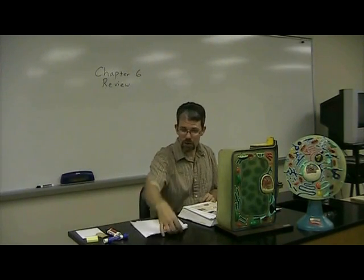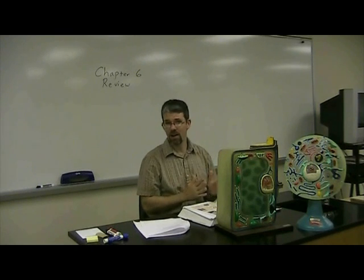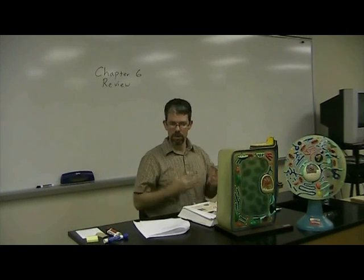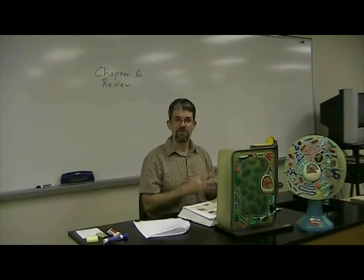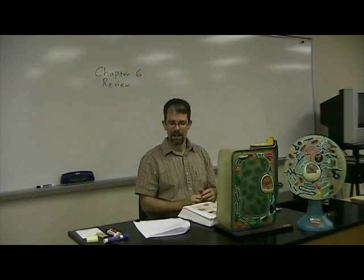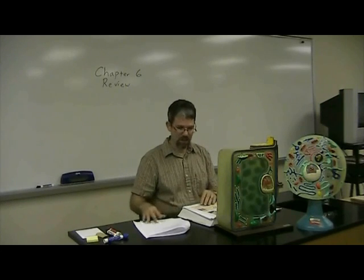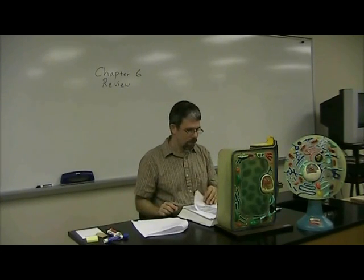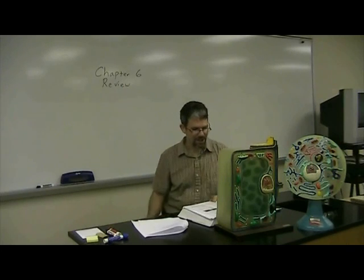Regarding cell surface structures, I talk about cell walls — primarily, who has what. Plants have cell walls made of cellulose. Fungi have cell walls made of chitin. Bacteria have cell walls made of peptidoglycan. Animals and most protozoans lack cell walls. That's most of it — make sure you study your notes and all the details therein.